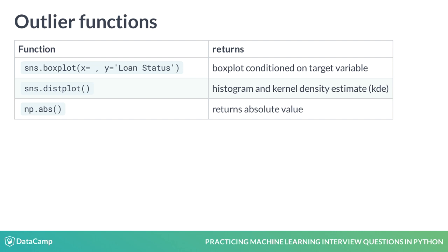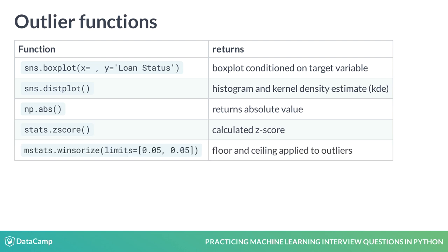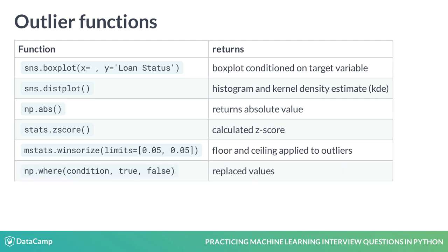NumPy's abs function returns an absolute value. From the SciPy module, stats.zscore calculates the z-score and mstats.winsorize is a handy function that, given a list of limits, replaces outliers — in this example, with the 5th percentile and 95th percentile data values. And finally, NumPy's where function evaluates a condition given as the first argument and replaces it with the values specified by the second when true, or by the last when it evaluates to false.